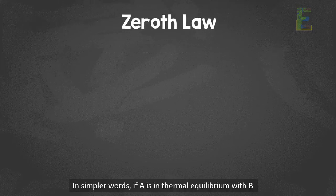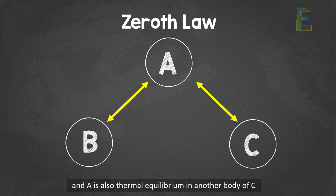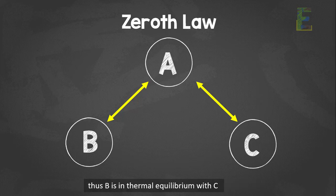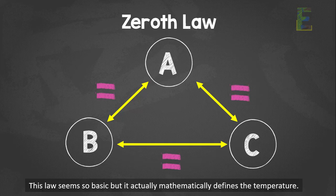In simpler words, if A is in thermal equilibrium with B, and A is also in thermal equilibrium with another body C, then B is in thermal equilibrium with C. A equals B equals C. This law seems so basic, but it actually mathematically defines temperature.